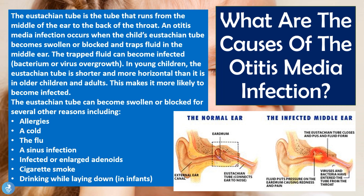The eustachian tube can actually become swollen or blocked for several reasons, including allergies, a cold, the flu, a sinus infection, infected or enlarged adenoids, cigarette smoke, or drinking while laying down — such as in infants during bottle feeding. Anything that causes irritation to the eustachian tube or a blockage in the flow of fluid from the middle ear into the eustachian tube and into the back of the throat will cause an otitis media infection.